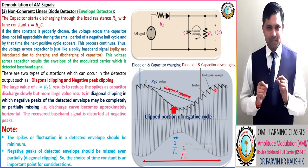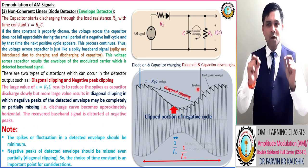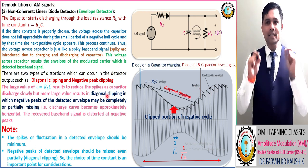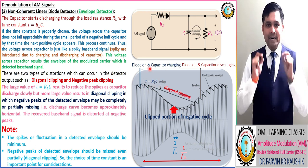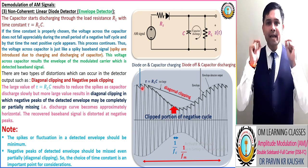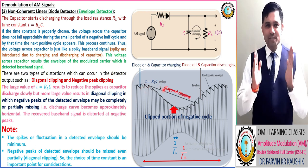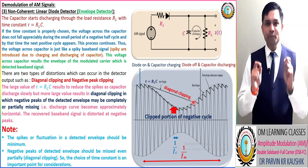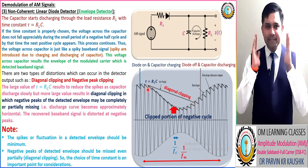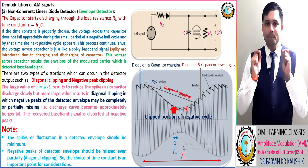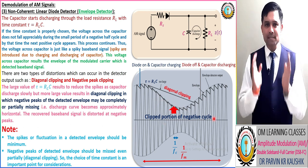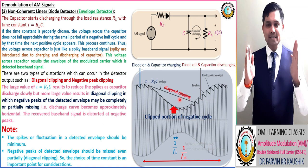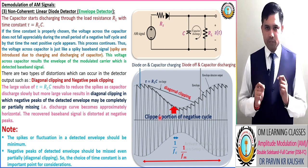The time constant tau equal to RL times C should be large, but a more large value results in diagonal clipping, in which the negative peaks of the detected envelope may be completely or partially missing. This will be discussed in the next lecture.